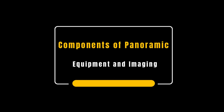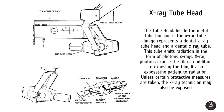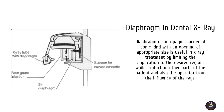First, we will look into the components of panoramic equipment and imaging. X-ray tube head: produces the X-ray beam; the beam is aimed slightly upwards towards the slot in the cassette holder. Diaphragm: the X-ray beam is collimated by the diaphragm to form a vertical slit-shaped beam. The X-ray beam width should be no greater than 5 mm.